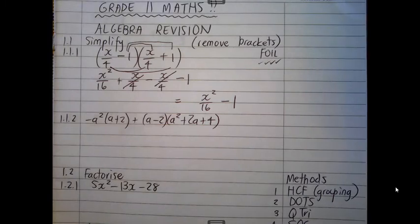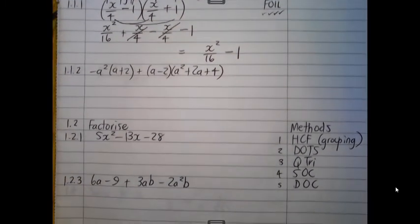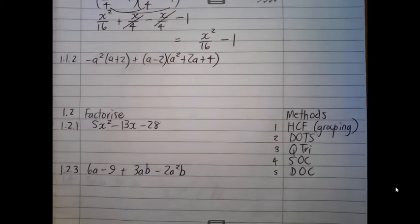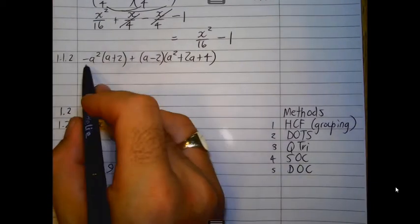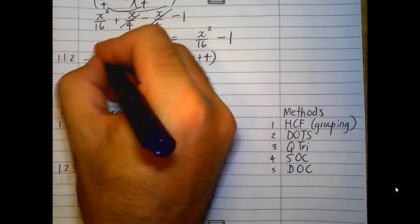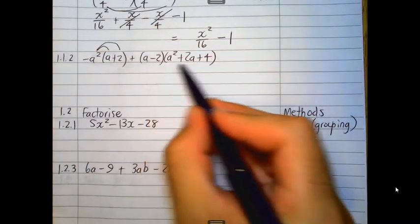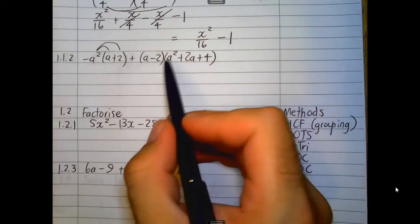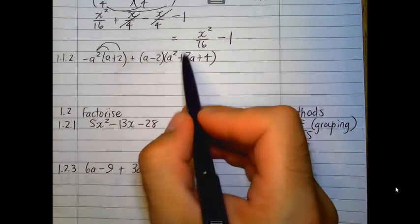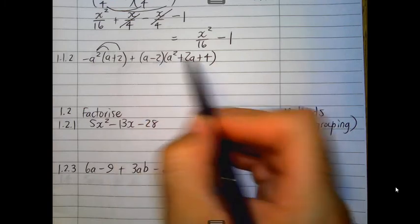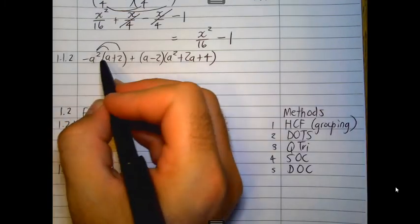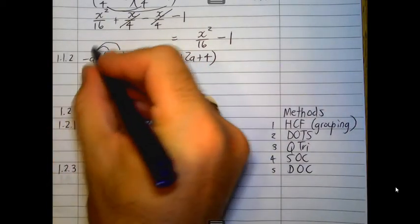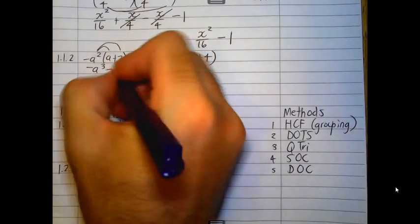In 1.1.2, it's a bit of a longer question, but here we're just going to be multiplying out more brackets. In the first case, negative A squared must be multiplied into this bracket. And this part of the question, it's not quite FOIL, it's a bit more than FOIL, but you're going to have to multiply the A through to the other bracket and the negative 2 through. So, first of all, negative A squared times A is negative A cubed. And negative A squared times 2 is negative 2A squared.